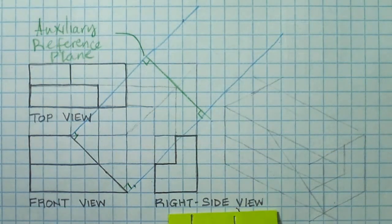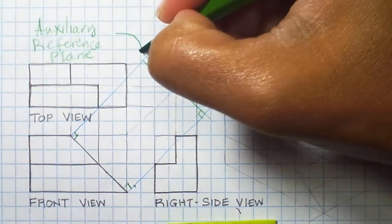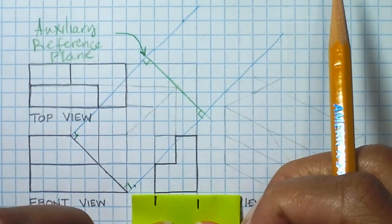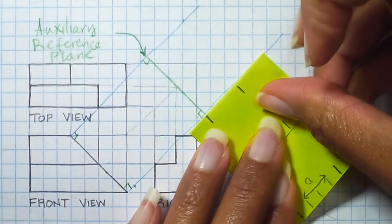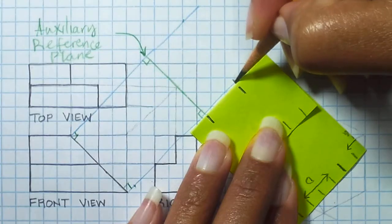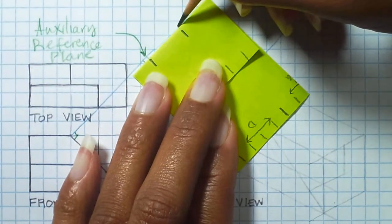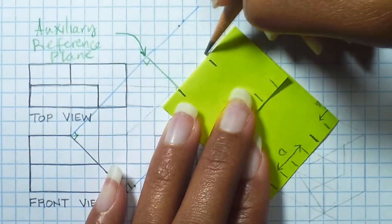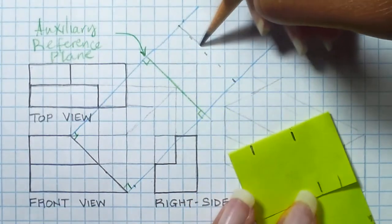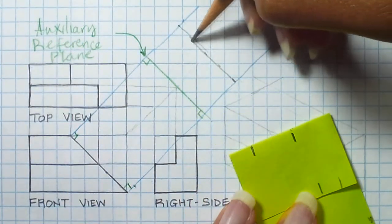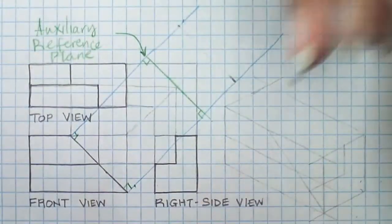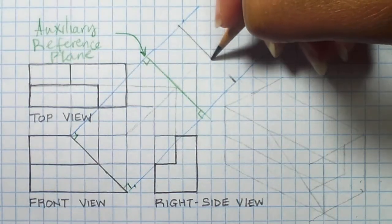plane. So I'm taking my depth that I've just marked off and I'm going to transfer it over to my auxiliary reference plane. This is where I'm starting my drawing, so this is my depth that I am marking out. And we can put extra guides to make sure that we maintain a straight line or maintain the depth.